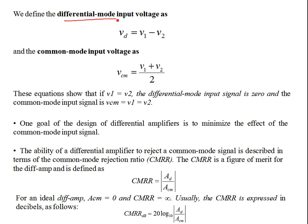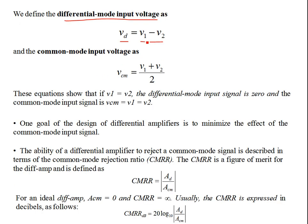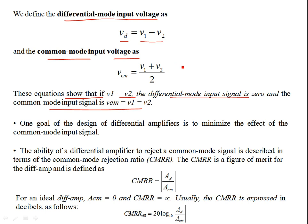We define the differential mode input voltage VD as V1 minus V2. The common mode input voltage is given as the average of the two signals: (V1 + V2) / 2. These equations show that if V1 equals V2, the differential mode input signal is zero, and the common mode input signal VCM equals V1, which equals V2. If V1 equals V2, there is no difference, and the output becomes zero.